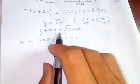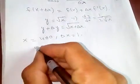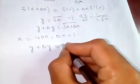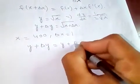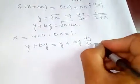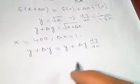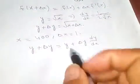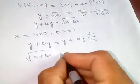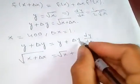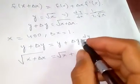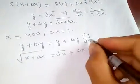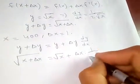From this, I can say y + Δy equals y + (dy/dx)·Δx. Here y + Δy is √(x + Δx), and y is √x, so Δy equals Δx times dy/dx, which is 1 over 2√x.